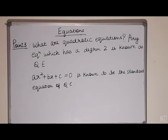Our point 3 is, what are quadratic equations? Any equation which has a degree 2 is known as quadratic equation. ax square plus bx plus c equals 0 is known to be the standard equation of quadratic equation. It can be seen that these equations will have two roots, real or imaginary.